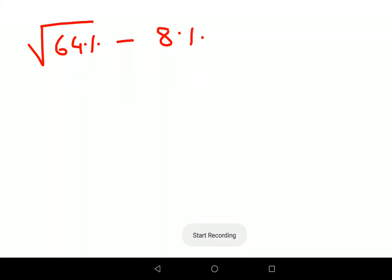Welcome everyone. So today we are going to understand what is square root of 64% minus 8%. A lot of people thought the answer for this one is 0.